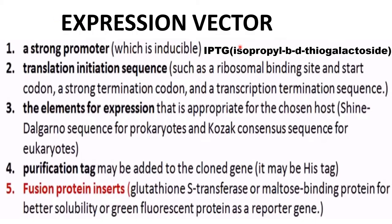The first element required for an expression vector is a strong promoter, which requires an inducer called IPTG — full form: isopropyl-β-D-thiogalactoside. This inducer induces the promoter to produce or express the protein.